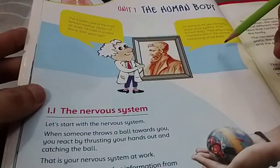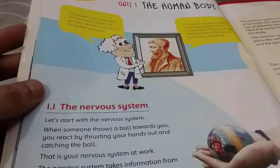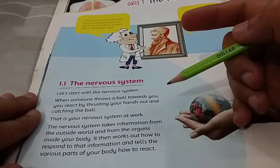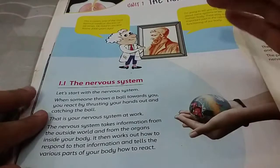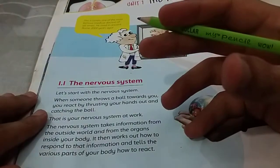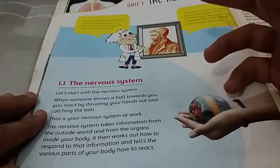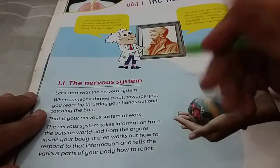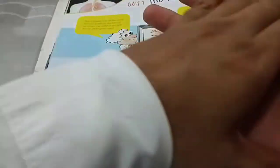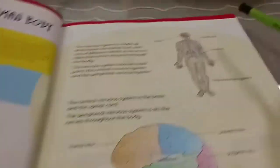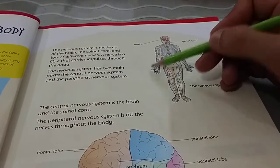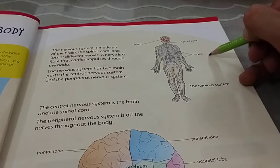We are not going to read these details for now; we are going to stick to the basics. We have the nervous system, the circulatory system, the respiratory system, the muscular system, the skeletal system, the digestive system, and the urinary system. Now let's talk about the nervous system. Do you know what the nervous system is? When you pick up a bottle of water in summer, you touch the bottle and you know if the water is cold or warm.